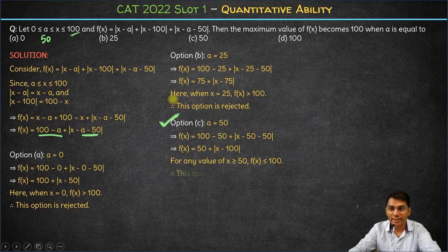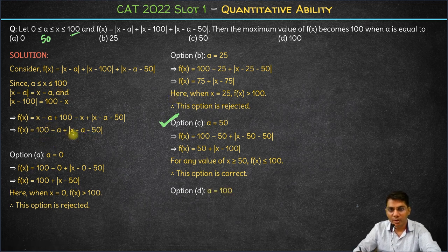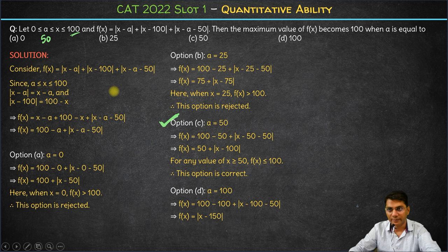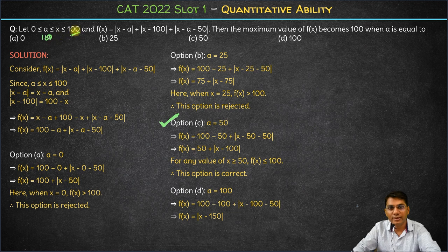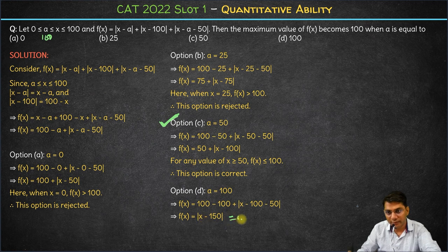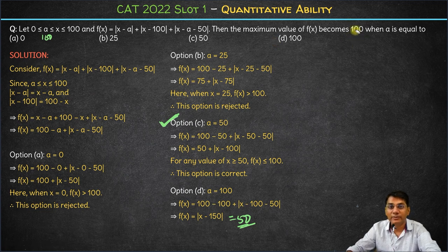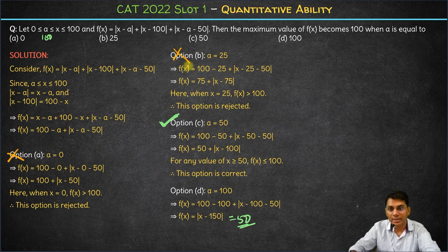Let's verify option D as well. If a = 100, f(x) = 0 + |x - 150|. Since a = 100, x must satisfy x ≥ 100 and x ≤ 100, so x can only equal 100. Putting x = 100 gives f(x) = 50, which is not 100. So the maximum value of f(x) is not 100 in this case either, and option D is rejected. Options A, B, and D are all rejected — only option C is the correct answer.